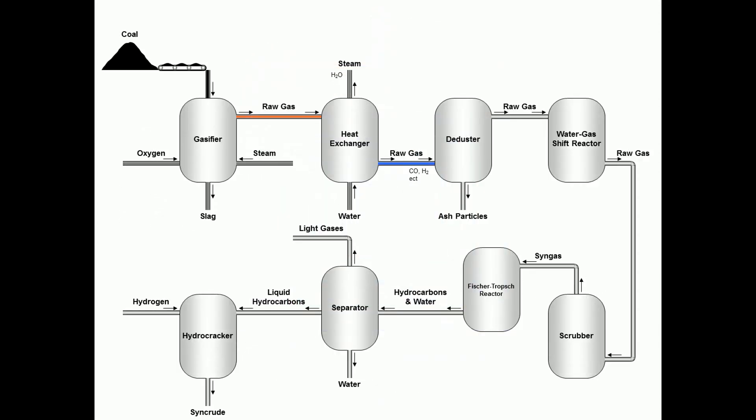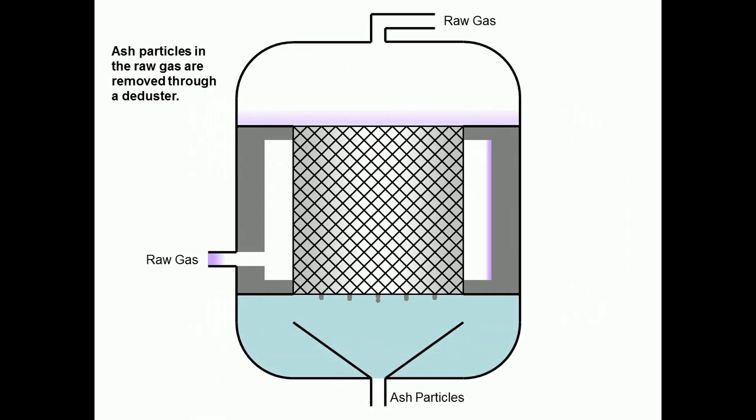In the third step, raw gas is sent into a deduster. Ash particles suspended in the raw gas are removed through the deduster.